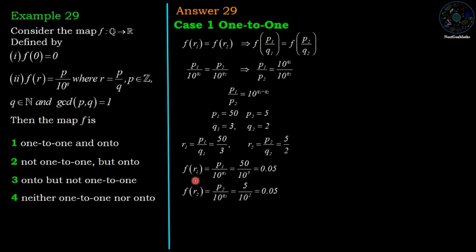Now images of r1 and r2: F(r1) = p1/10^q1 = 50/10^3 = 0.05, and F(r2) = p2/10^q2 = 5/10^2 = 0.05.